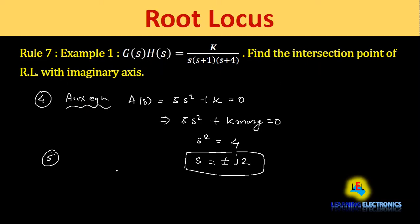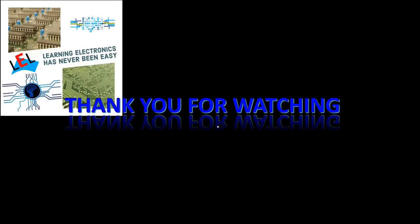Step 5: solving the auxiliary equation gives s = ±j2. These are the intersection points of the root locus with the imaginary axis. Since k_marginal = +20 is a positive value, this is a valid intersection. Hope you have understood the topic — thank you very much for watching, and please subscribe for more updates.